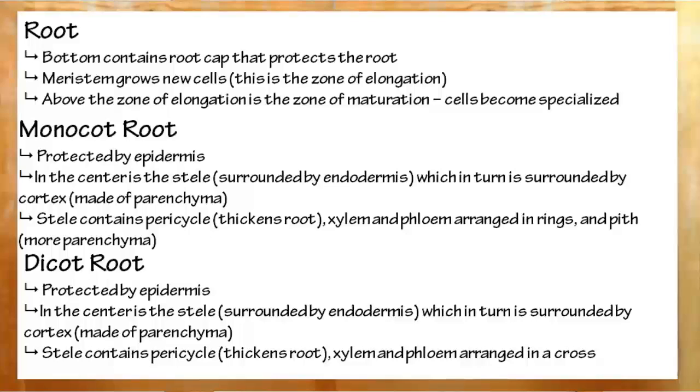In dicots, we have the epidermis, same as ever, cortex, endodermis, and then the pericycle again, which allows thickening. But here's where things get interesting. The xylem is arranged in a cross, and everything in between the arms is phloem.